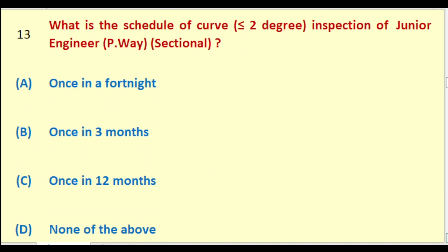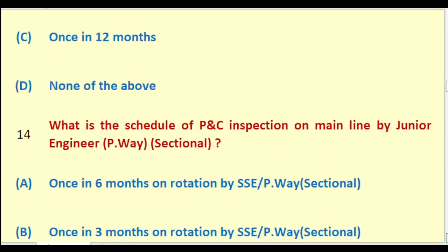What is the schedule of curve inspection (less than or equal to two degrees) for Junior Engineer Permanent Way Sectional? Options: once in a fortnight; once in three months; once in twelve months; none of the above. The right answer is: once in twelve months.